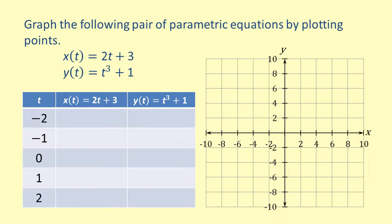We want to find values of X and Y that correspond to various values of T. Let's first look at T equals negative 2. If we substitute negative 2 for T in X of T, we get 2 times negative 2 plus 3, which is negative 1.